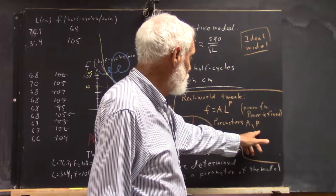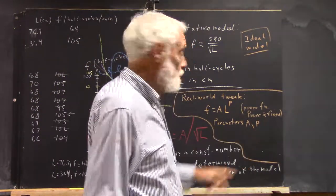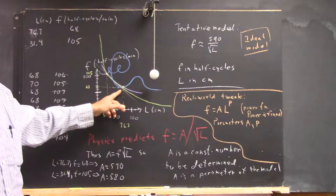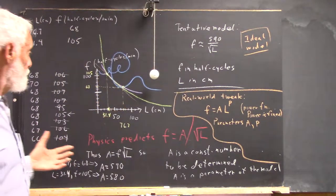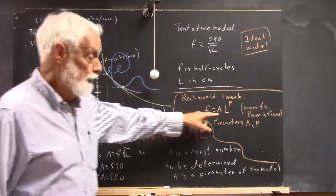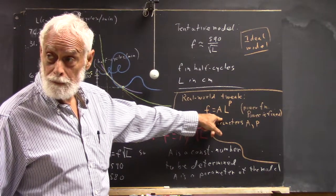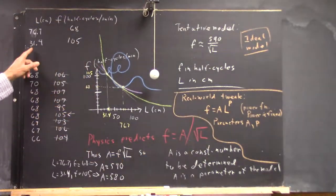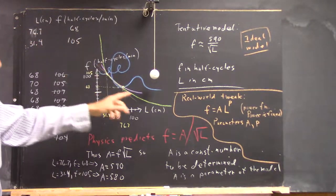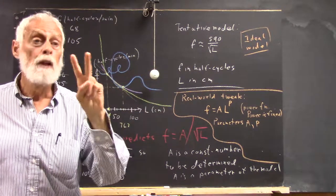How do we determine the parameters A and P? Well, we have two data points. So we could plug this frequency and this length in here and get an equation. And we could plug this frequency and this length in and get another equation. That would give us two equations.